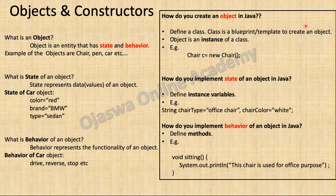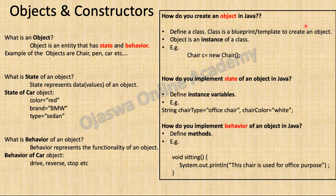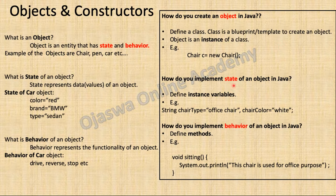A class is a blueprint or template through which objects are created. From one class, you can create any number of objects of similar type. An object is an instance of a class — the words object and instance are used interchangeably. Object has state and behavior. To implement state of an object in Java, we define instance variables. To implement behavior of an object in Java, we define methods.